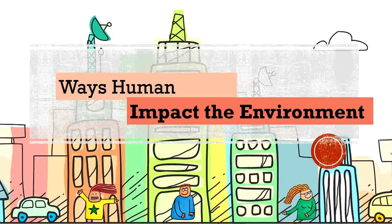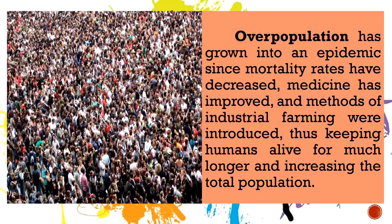Here are the ways humans impact the environment. First, as seen in the picture, it is overpopulation. Overpopulation has grown into an epidemic since mortality rates have decreased. Medicine has improved and methods of industrial farming were introduced, thus keeping humans alive for much longer and increasing the total population. Since we are overpopulated, it pretty much affects our environment as well.